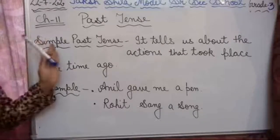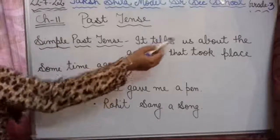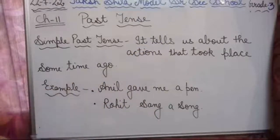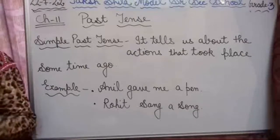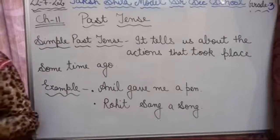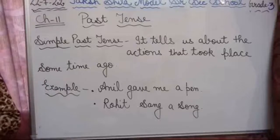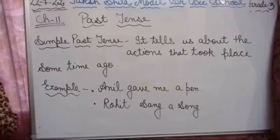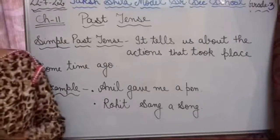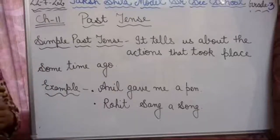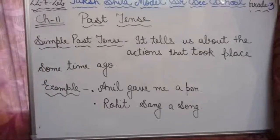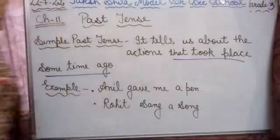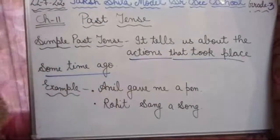What is past tense? Simple past tense tells us about the actions that took place some time ago. It is referring to the action which was taken some time back — any action which was taken some time before. That is known as simple past tense.